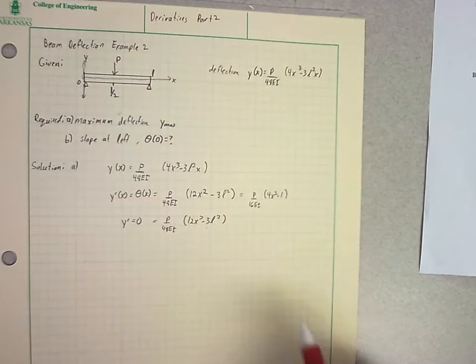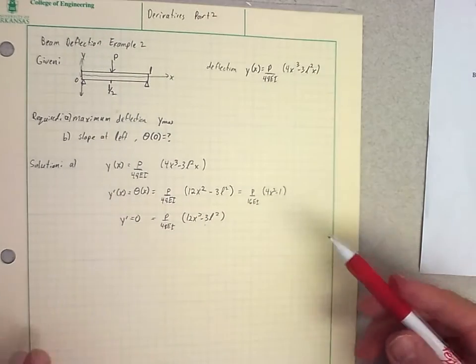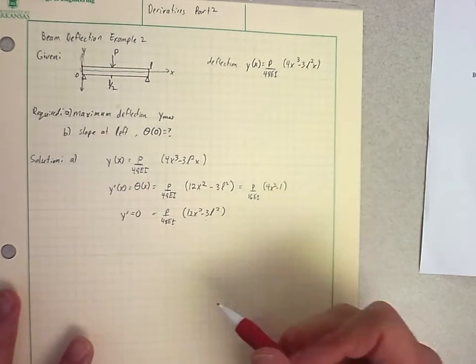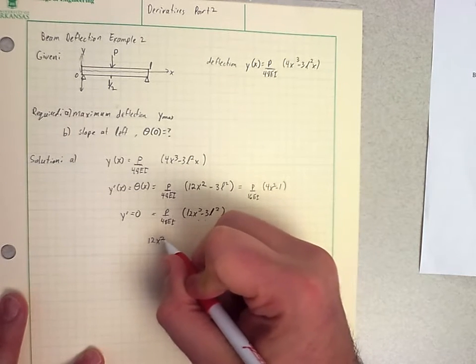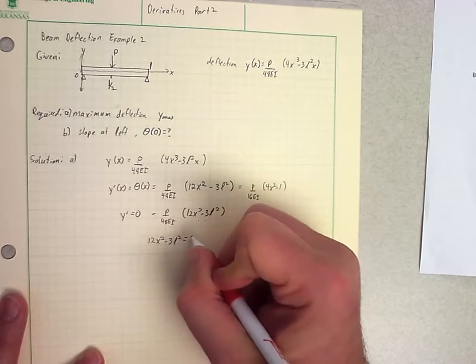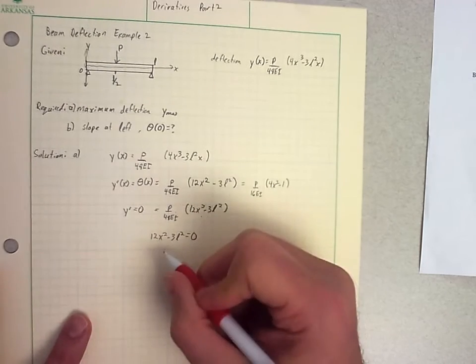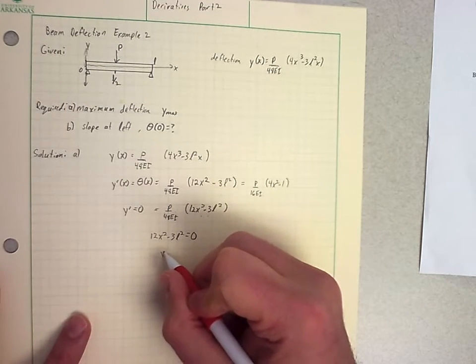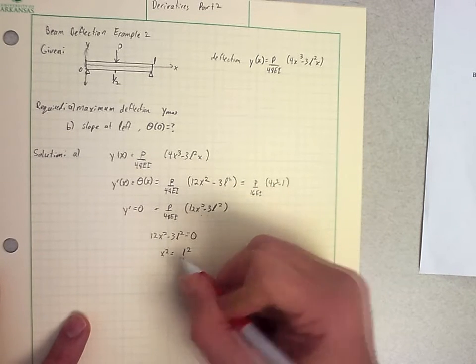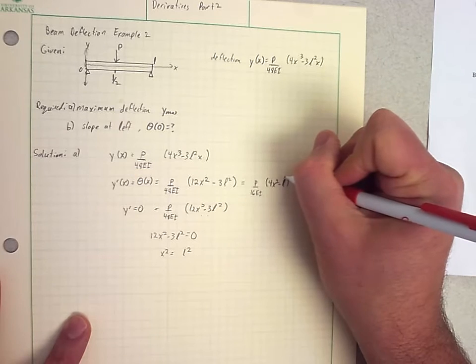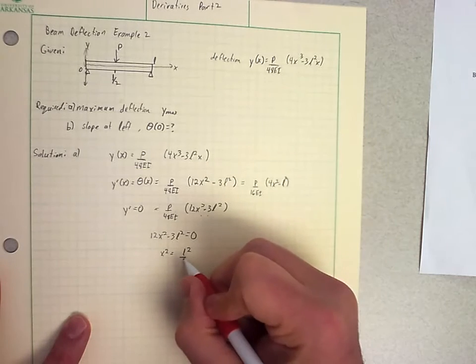Either way you want to do that is fine. I'll just leave it in my unsimplified manner since I've already started that way. But basically, I need to set that equal to 0. So 12X squared minus 3L squared equals 0. So I get that X squared equals L squared over 4.